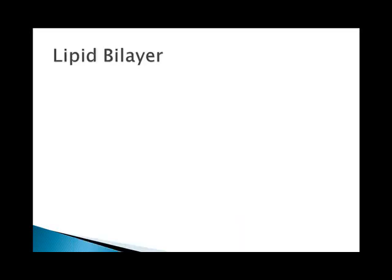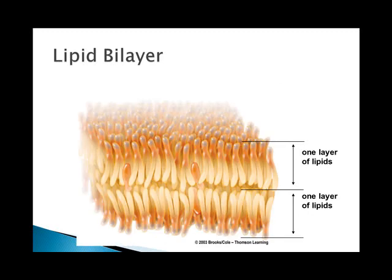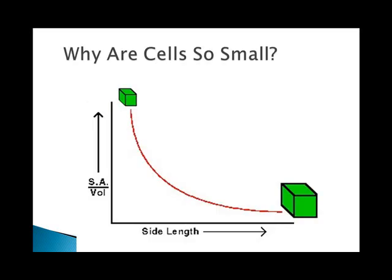Starting from the outside in, the cell membrane is made mostly of a double layer, or bilayer, of phospholipids with scattered proteins throughout it. The cell membrane allows the cell to be selective in what types of molecules can pass through it. Cell size is controlled by metabolic requirements and the needs for DNA. If the cell is too small, it won't have enough DNA, and if it's too big, it will prevent communication from the DNA to the rest of the cell.